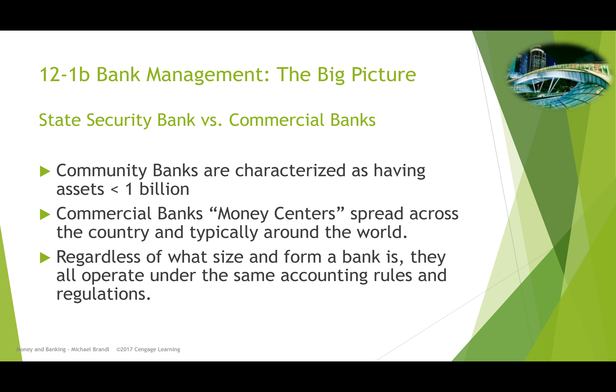Larger banks like Wells Fargo and JP Morgan Chase are called money center banks — they tend to have headquarters in major financial centers. A bank like JP Morgan Chase has branches in the most popular states in the country and also internationally, making it a global bank. Regardless of size, though, all banks operate under the same accounting rules and regulations, and we'll now look at the balance sheet applicable to any bank.